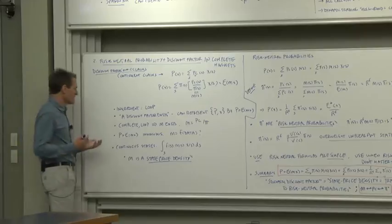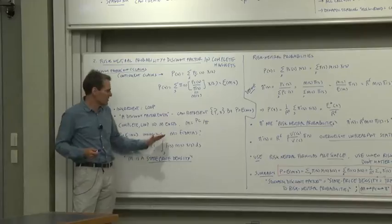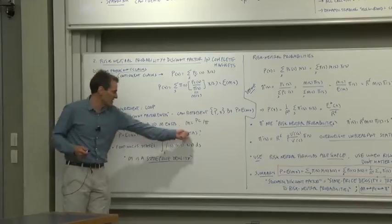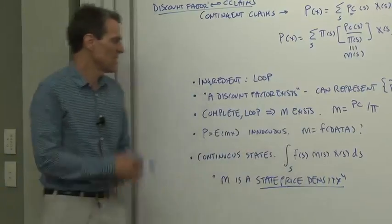That tells us something philosophical. It tells us that price equals expected discounted payoff is really fairly innocuous. And all the action in asset pricing has to come from tying the discount factor to other data, not just this bundling.